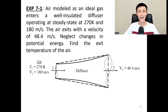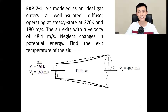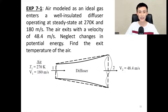Let's look at an example. For this problem it says air is modeled as an ideal gas — the substance is air, not water, so be careful. The entire diffuser is well insulated, meaning no heat transfer. It's in steady state, so dE/dt equals zero. At the inlet, the temperature is 270 K and the speed is 180 m/s. At the outlet, the speed is 48.4 m/s. It says to neglect changes in potential energy. Find the exit temperature of the air.